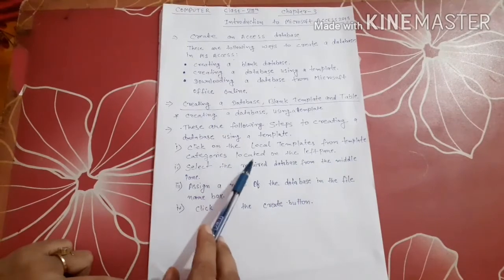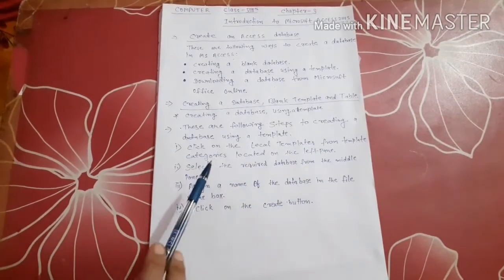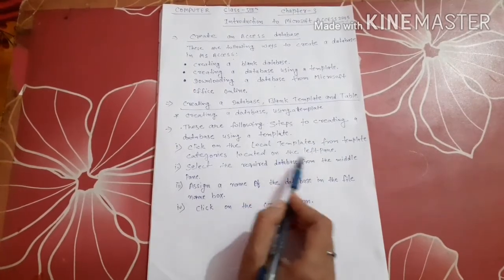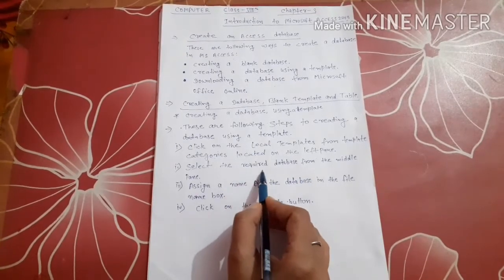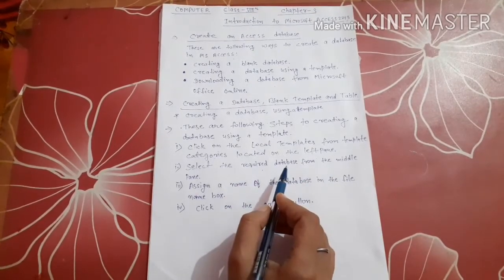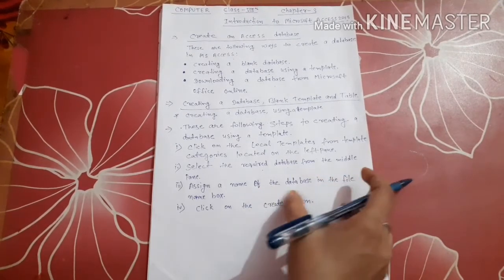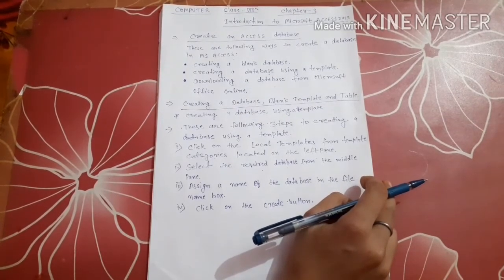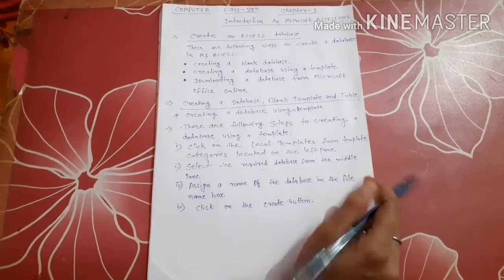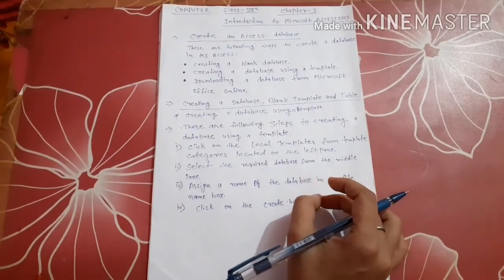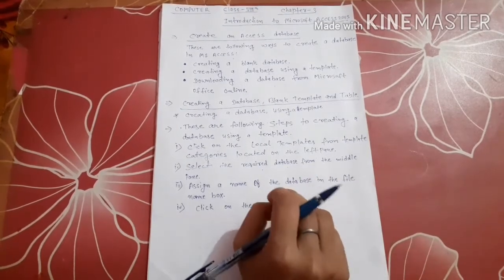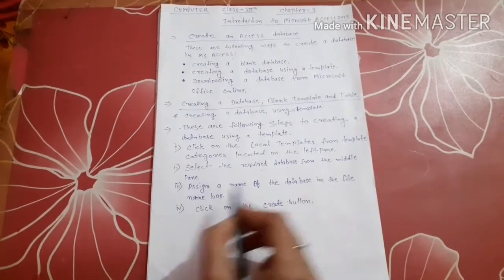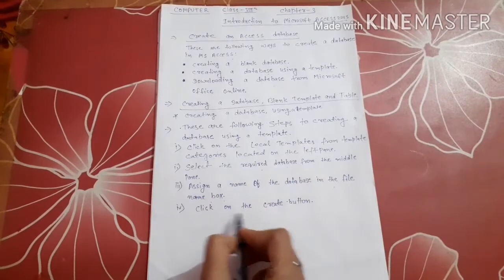To create a database using a template, follow these steps. First step: click on the local template from the template categories located on the left pane. Second step: select the required database from the middle pane. Third step: assign a name to the database by typing in the file name box.